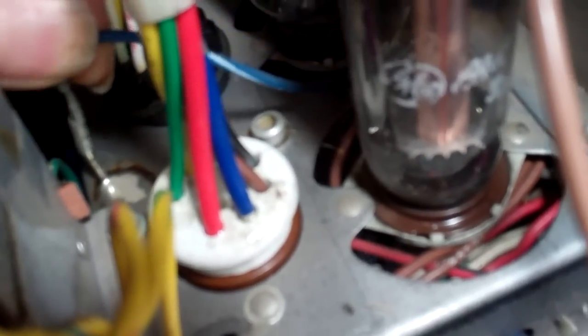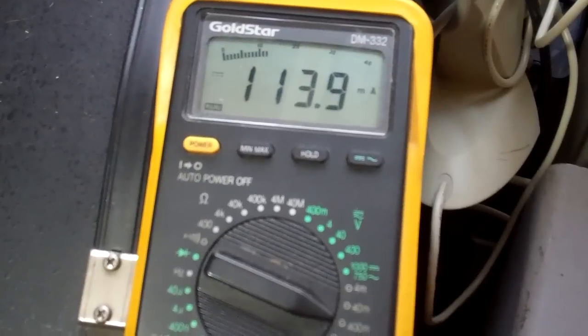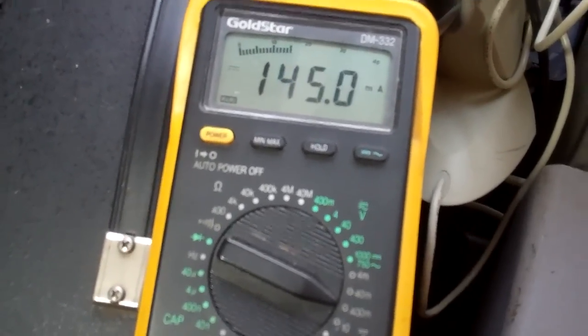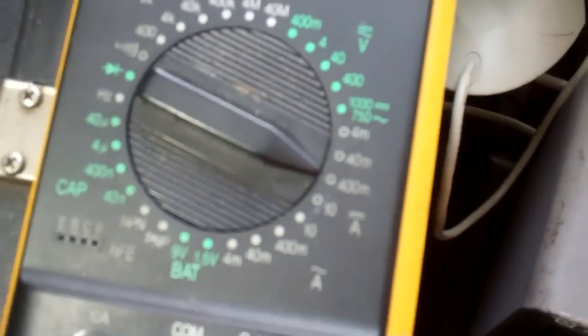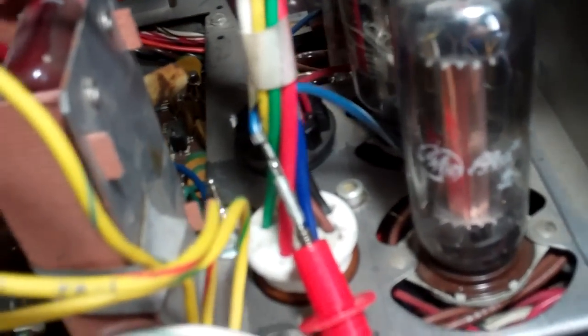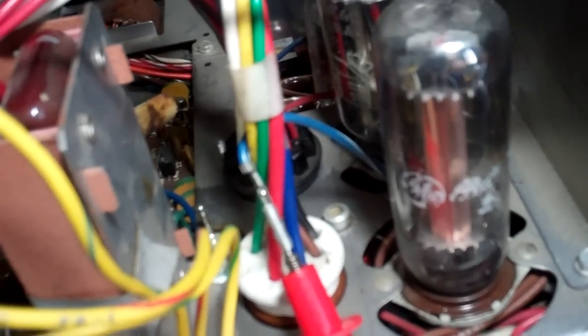This set also has a cathode current test adapter built in, which is this little thing right here. You simply unplug that off of there and put your meter in series with that. In fact, I can do that real quick just to verify. Now not all sets have this. In fact, in my experience, very few do.